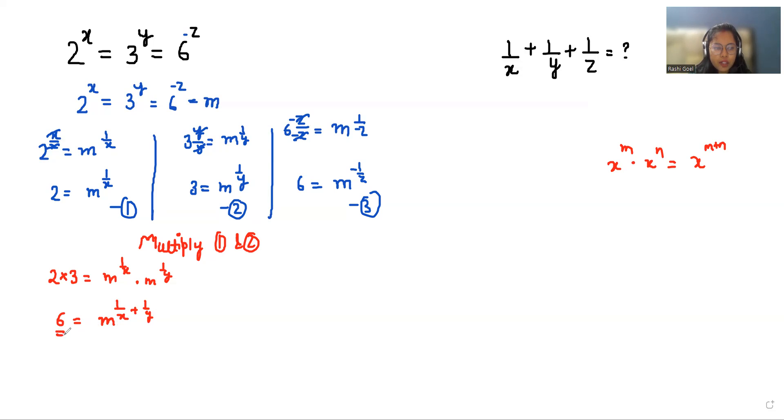So we can write it as n^(1/x + 1/y). So the value of 6 = n^(-1/z) according to equation number 3. So we can write it as n^(-1/z) = n^(1/x + 1/y).